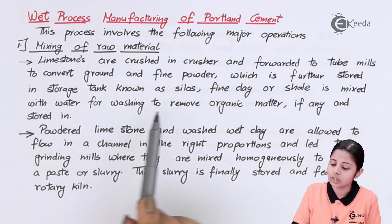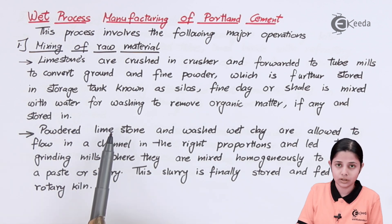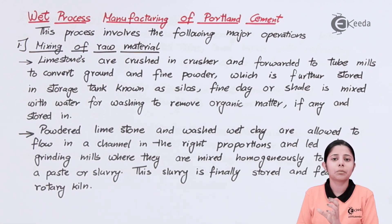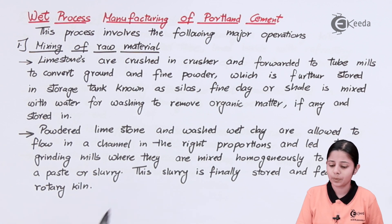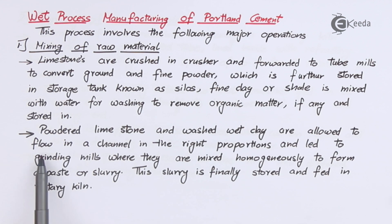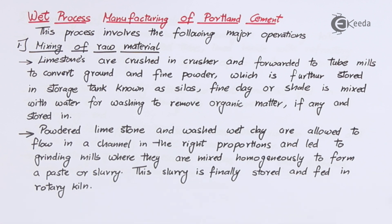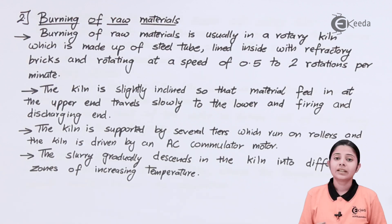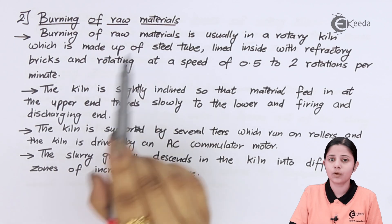Fine clay or shale is mixed with water for washing to remove any organic matter, and is stored separately. The powdered limestone and washed wet clay are then allowed to flow in a channel in the right proportions and led to grinding mills, where they are mixed homogeneously to form a paste or slurry. We must ensure that when both are mixed they form a homogeneous mixture.